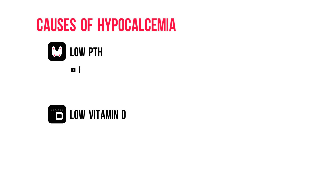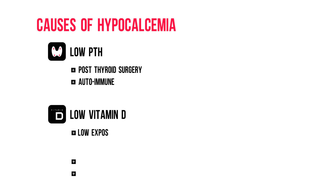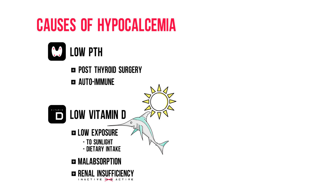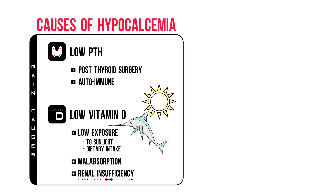Hypoparathyroidism is usually seen after thyroid surgery, but it can also be the result of an autoimmune disorder. Causes of low vitamin D levels can be subdivided into three categories: low exposure to vitamin D — either low sunlight exposure or low dietary intake — malabsorption, and chronic renal insufficiency, leading to impairment of the conversion of inactive vitamin D to active vitamin D by the kidneys.